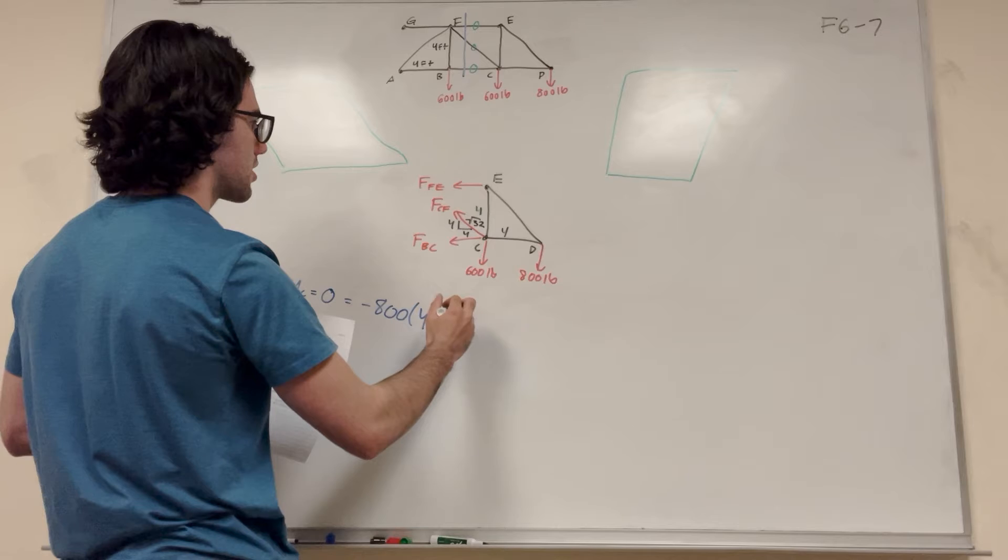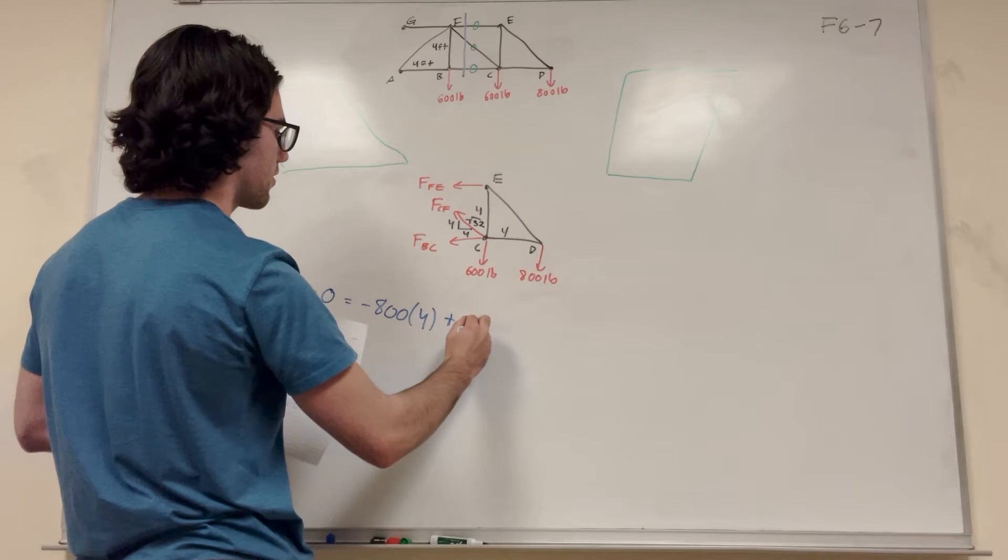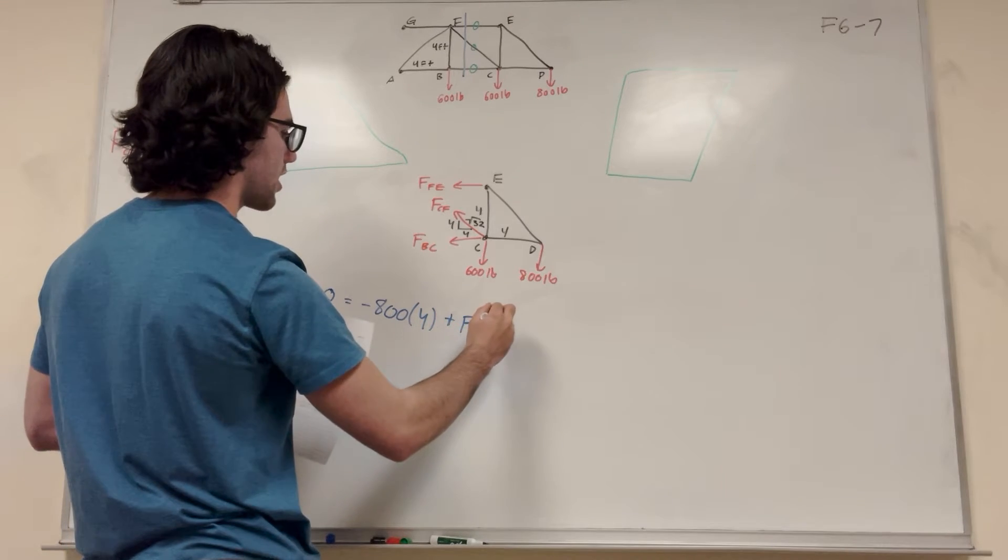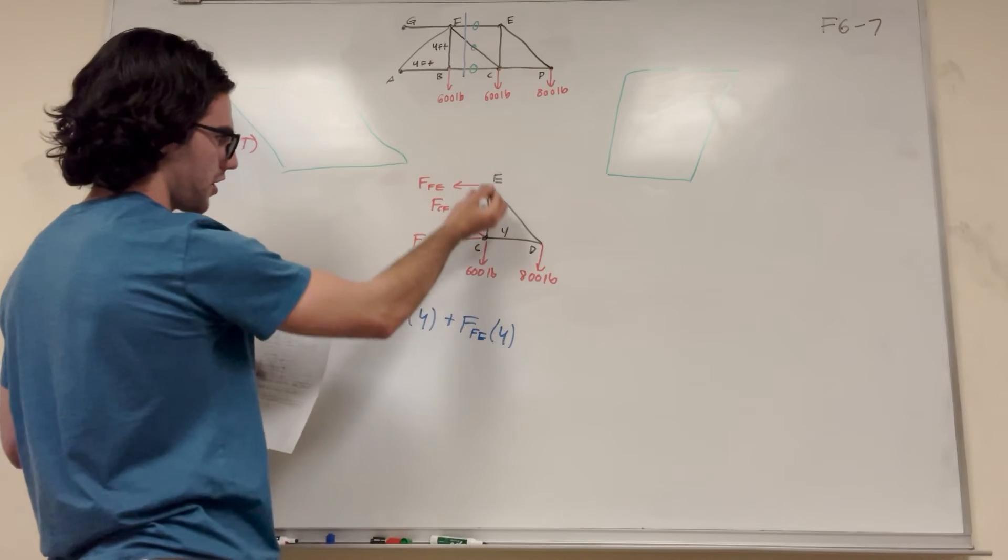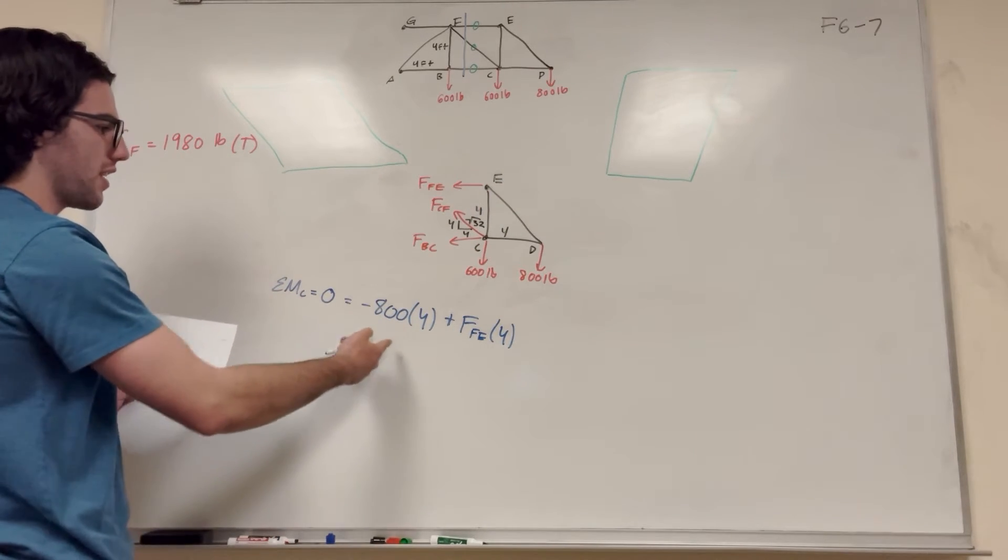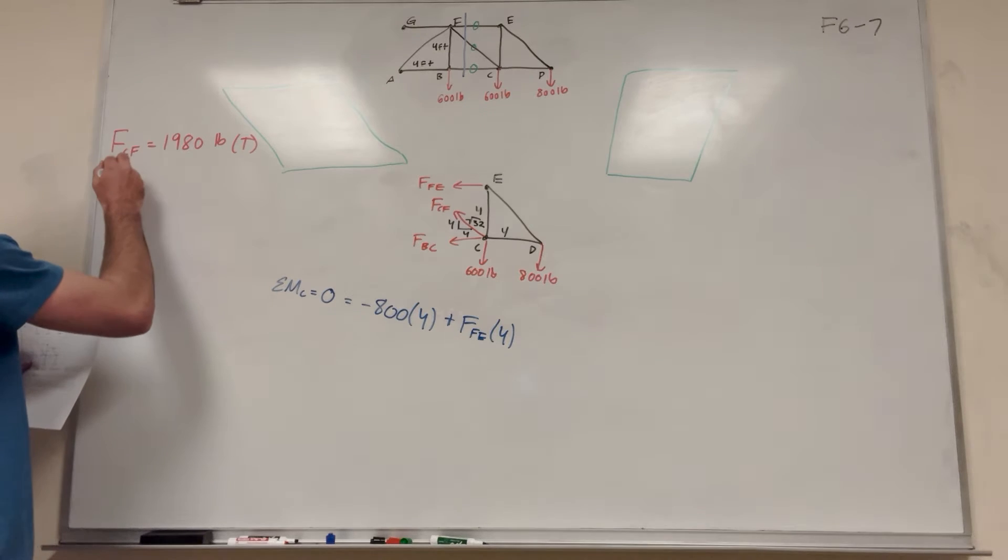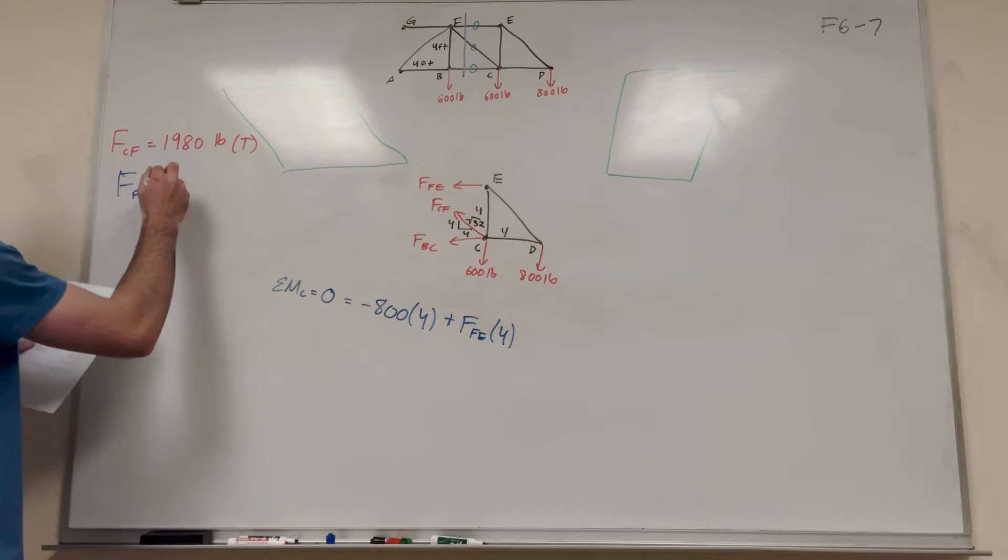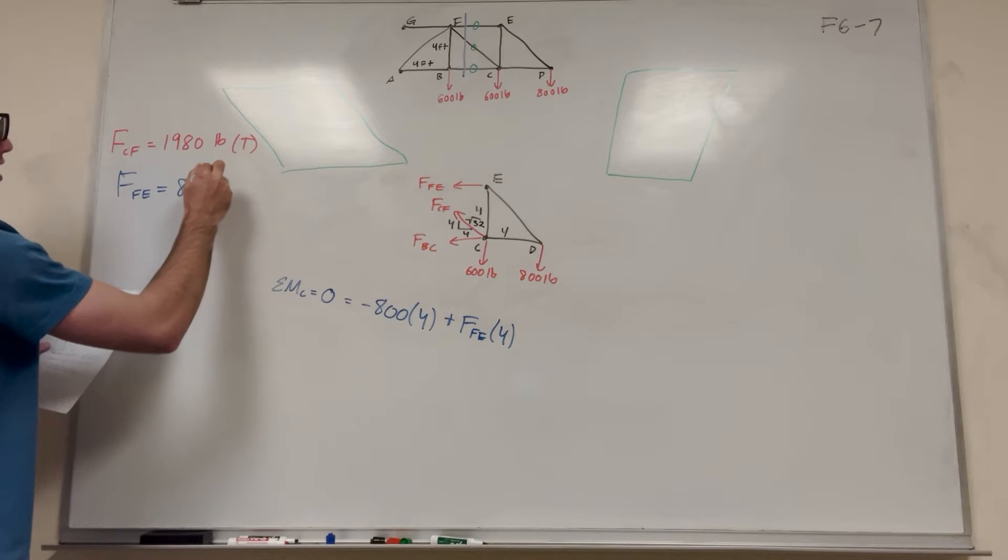And then we have this. So this pushes this way, which is going to make it want to rotate counterclockwise, which is going to be a positive number. So you're going to be adding FE, force FE, times its distance away, which is 4 feet vertical. So this is easy math.